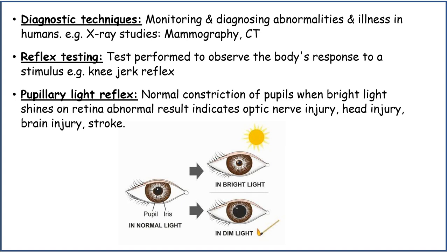Reflex testing is when a test is performed to observe the body's response to a stimulus — for example, the knee jerk reflex. The pupillary light reflex is the normal constriction of pupils when bright light shines on the retina. An abnormal result indicates optic nerve injury, head injury, brain injury or stroke. Normally, when bright light shines, the pupil constricts, and in dim light, the pupil dilates.